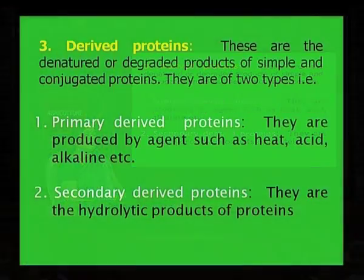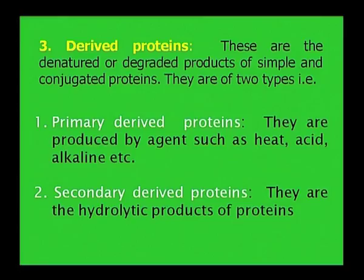The third group of protein is derived proteins. These are the denatured or degraded products of simple and conjugated proteins. They are of two types: primary derived proteins and secondary derived proteins. Primary derived proteins are produced by agents such as heat, acid, and alkali. Secondary derived proteins are the hydrolytic products of simple and conjugated proteins.